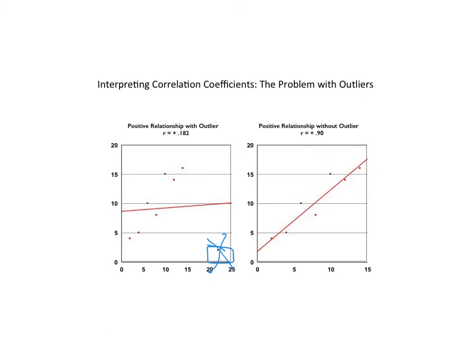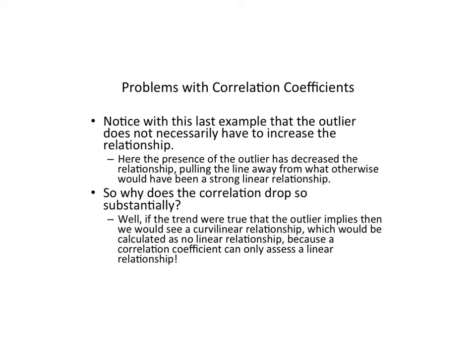The outlier doesn't necessarily increase or decrease the relationship, but it can strongly influence or pull the relationship in a different direction. If the trend were true that the outlier implies, we would see a curvilinear relationship, which is calculated as no relationship because a correlation coefficient can only assess a linear relationship. So what's happening is that outlier is starting to create what the computer thinks is a curvilinear relationship, and that's what's pulling the value down so much.